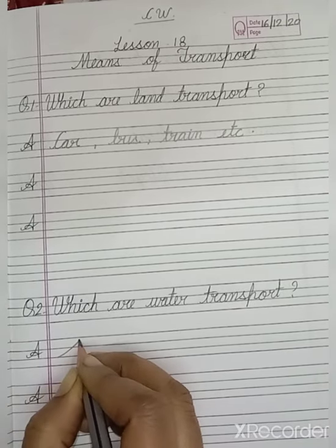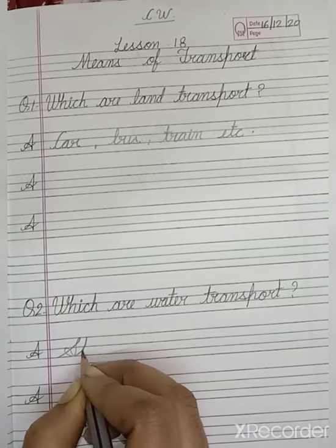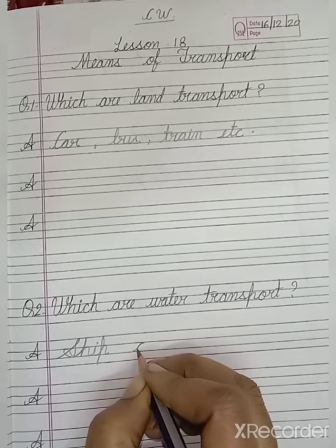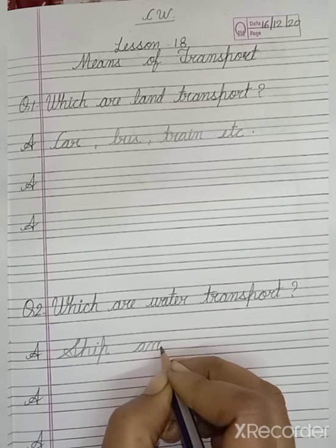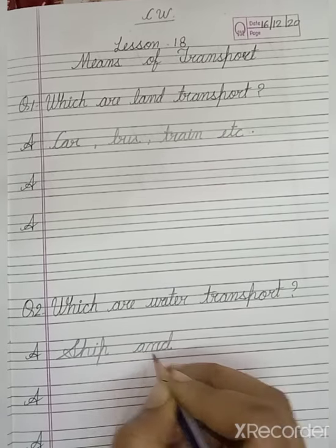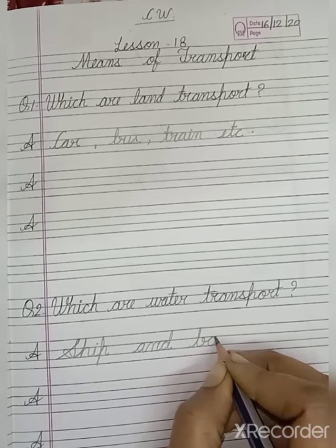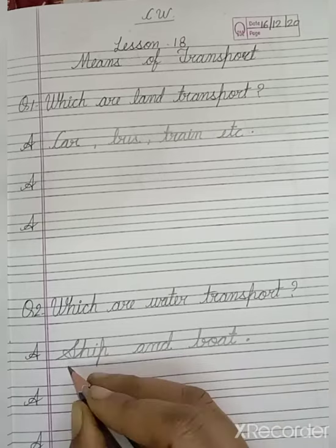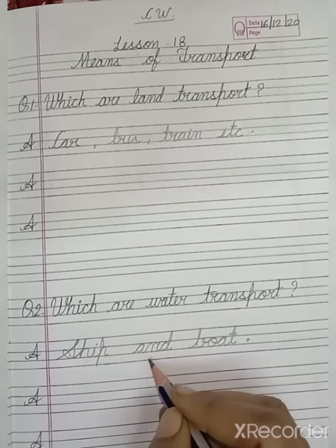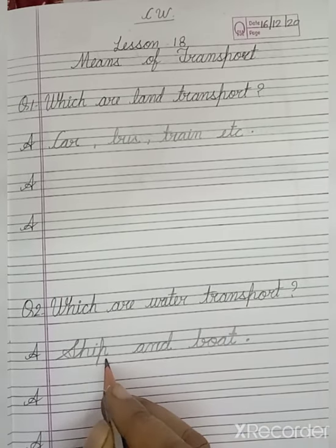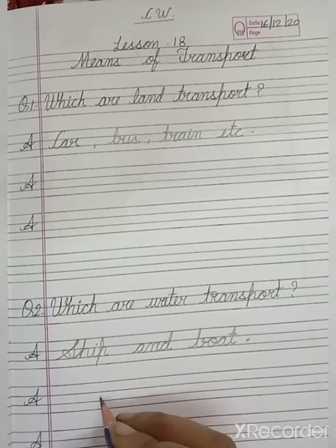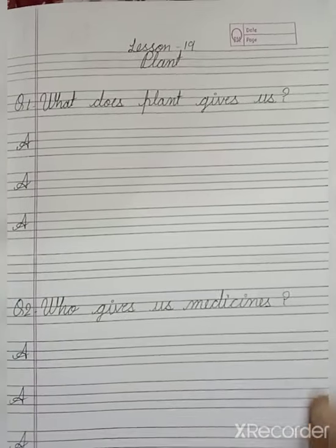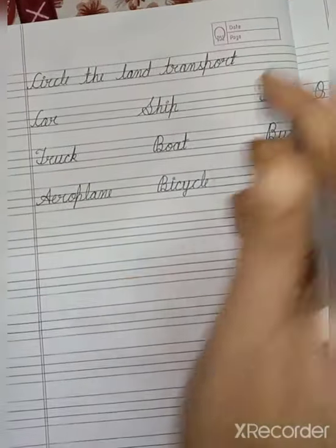First is ship. S H I P ship. Iske par aap ko yahan par and likhna hai - A N D. Ship and boat. B O A T boat. Phir aap ko yahan par full stop lagana hai. Write here H W.